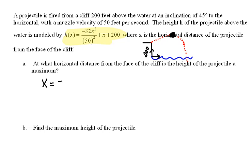So if x equals negative b over 2a, then that would be negative. Our b value here is 1 over 2 times the a value. Well, our a value is the entire coefficient in front of the x squared term. So in this case, it would be negative 32 over 50 squared.